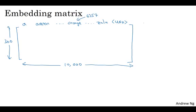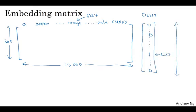So one piece of notation we'll use is that O6257 was the one-hot vector with zeros everywhere and a one in position 6257. And so this would be a 10,000 dimensional vector with a one in just one position. So this isn't quite drawn to scale. Yes, this should be as tall as the embedding matrix on the left is wide.